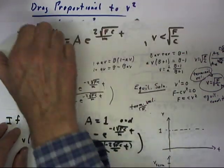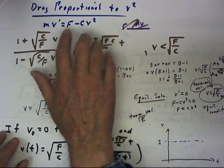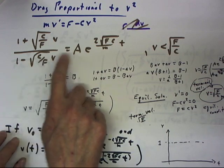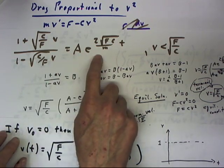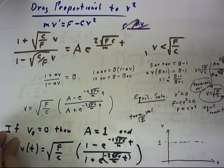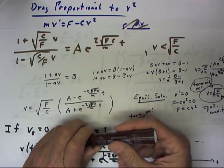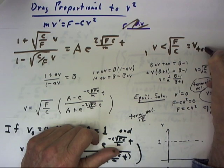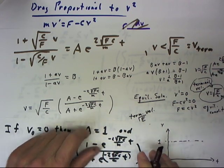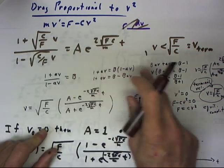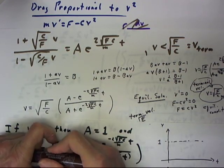In the case where drag is proportional to v squared, we obtain an equation whose solution satisfies the condition provided v is less than the square root of f over c. We can note that f over the square root of f over c is the terminal velocity, so this equation applies whenever v is less than the terminal velocity.